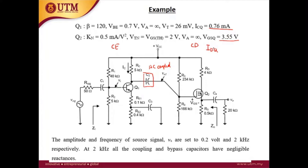We mainly use IDQ for calculations, so let's standardize this analysis. IDQ can be calculated using K times (VGSQ minus VGSTH) squared. K is 0.5m, VGSQ is 3.55V, and VGSTH is 2V. This gives IDQ equal to 1.2 milliampere.